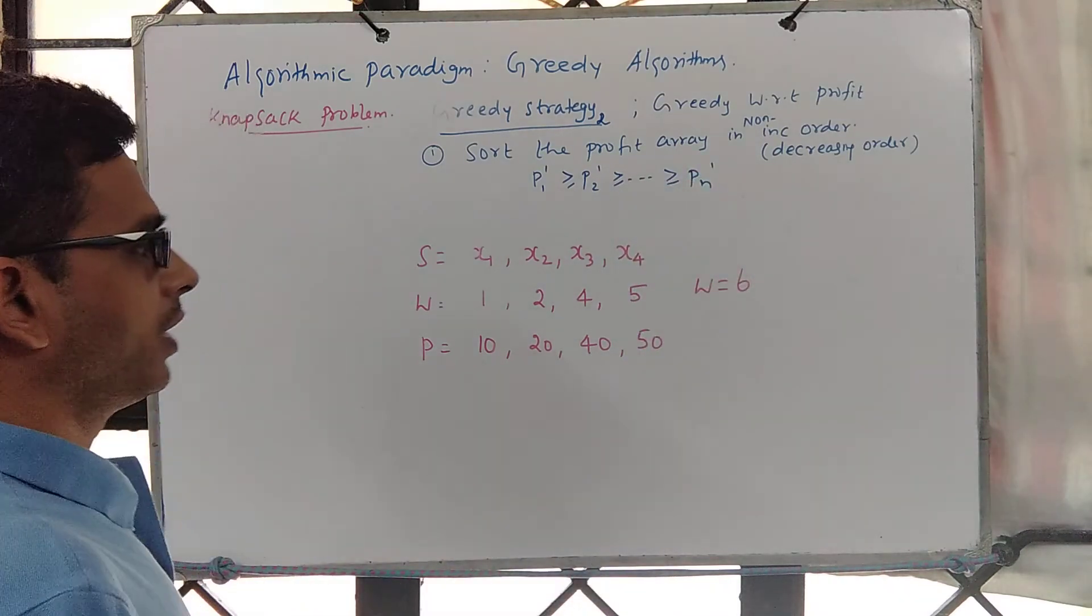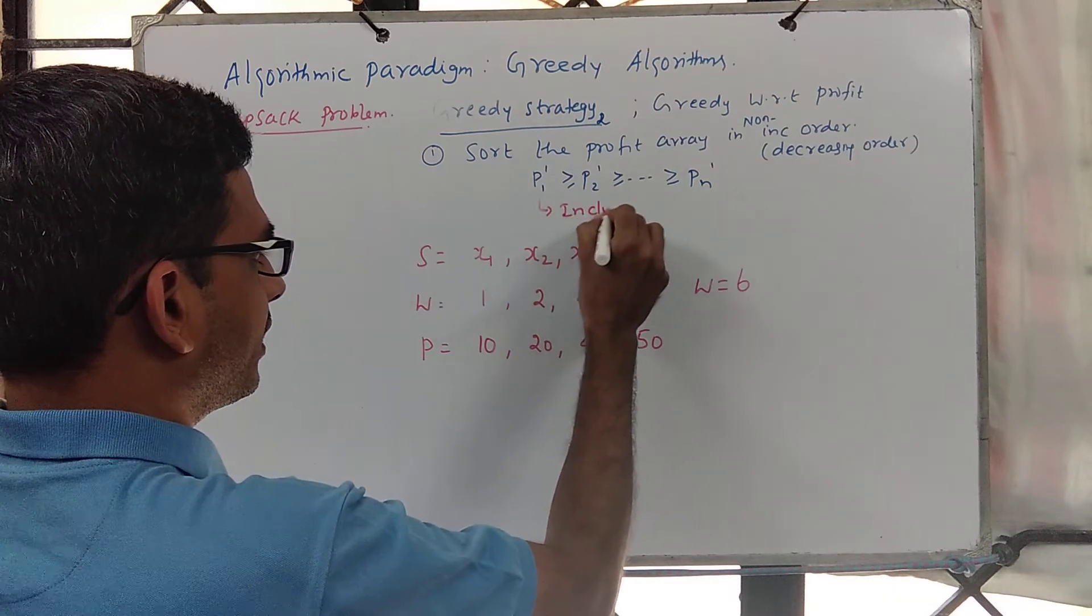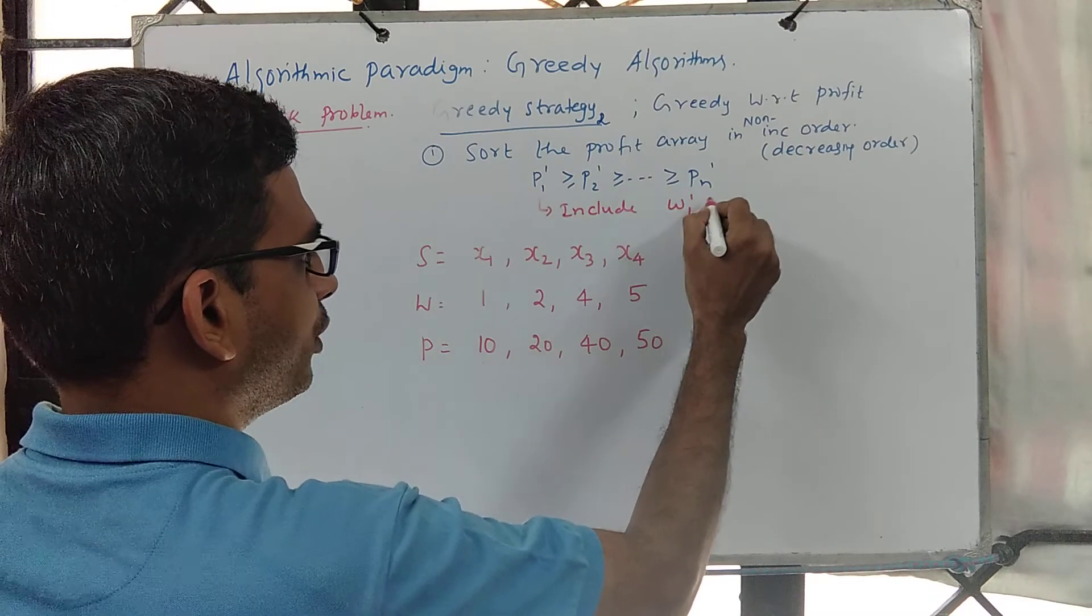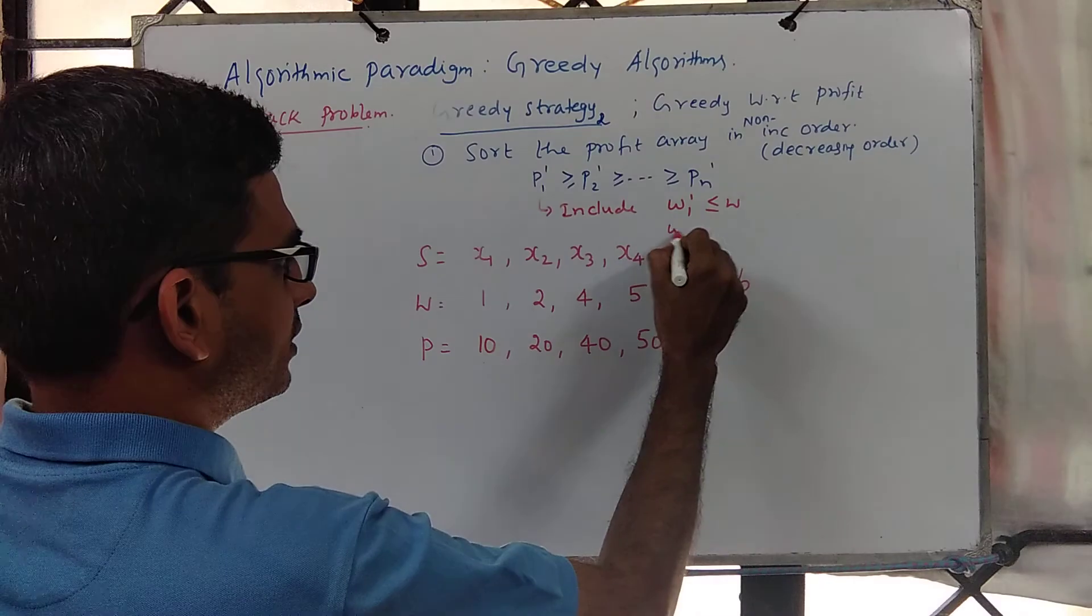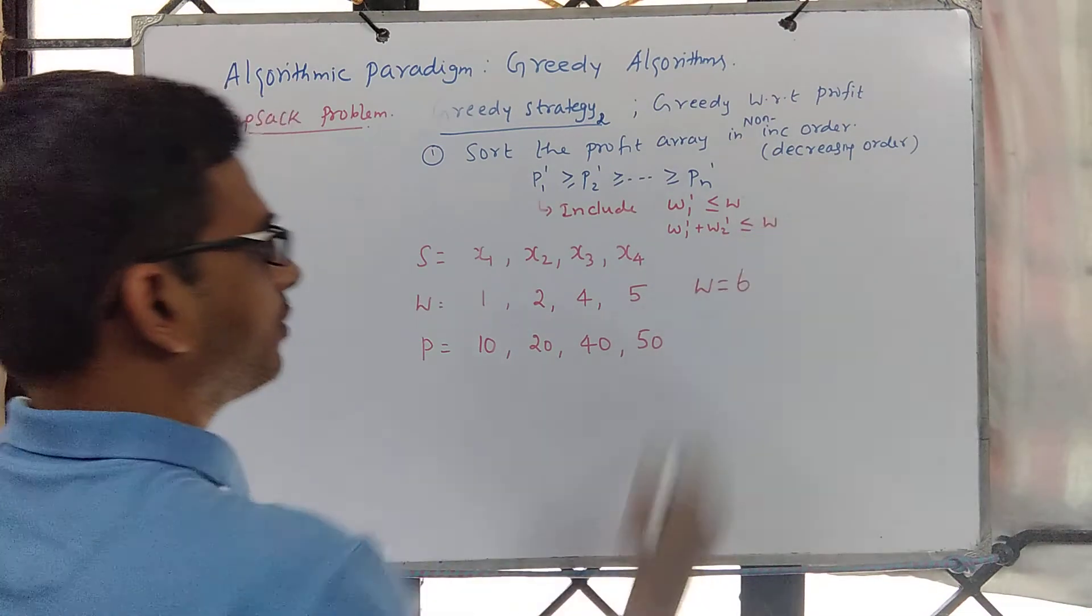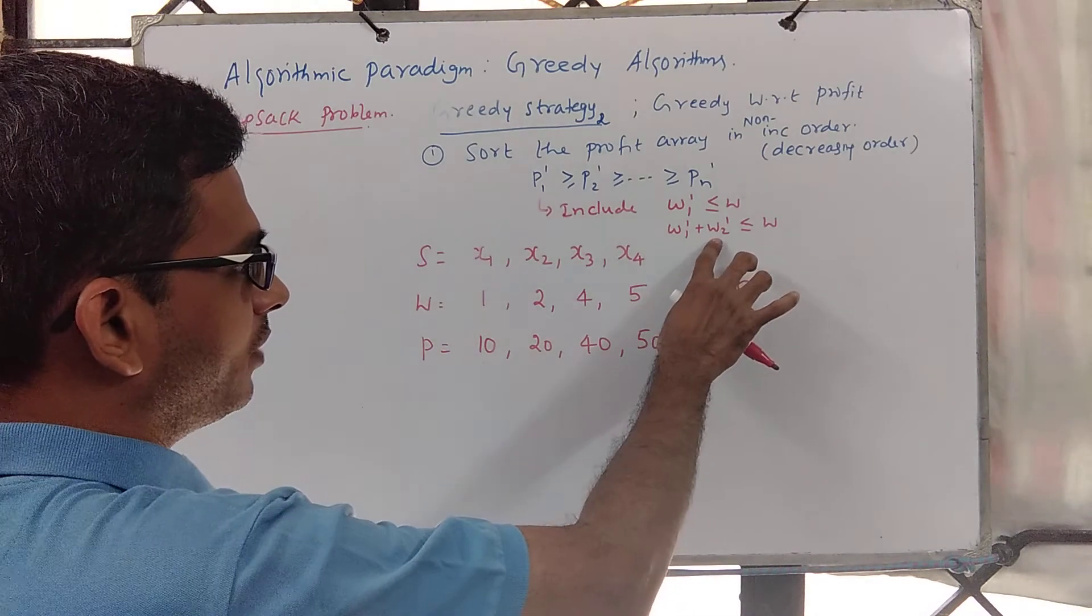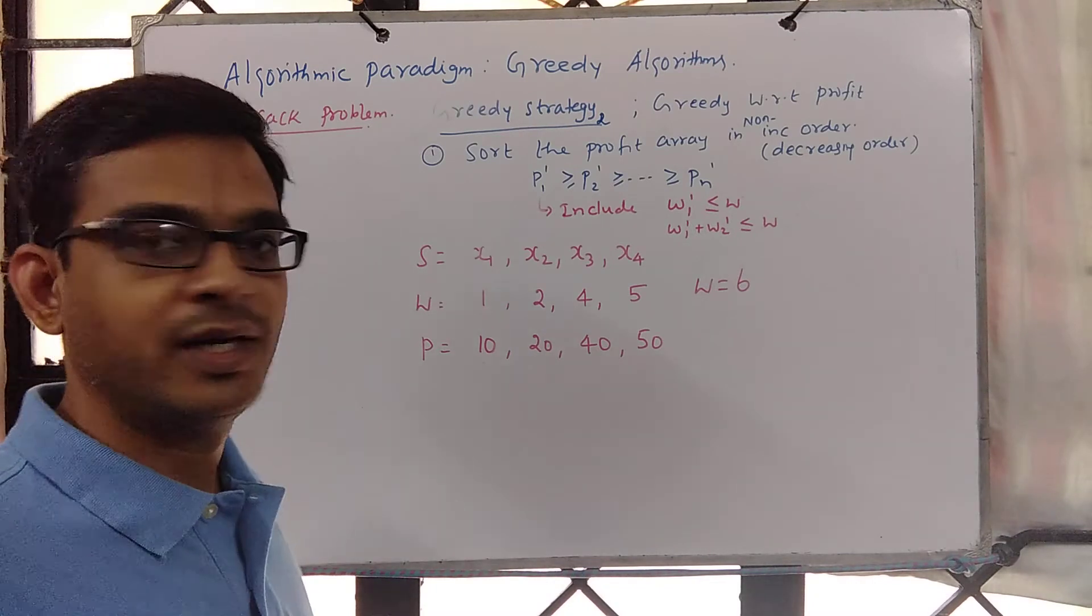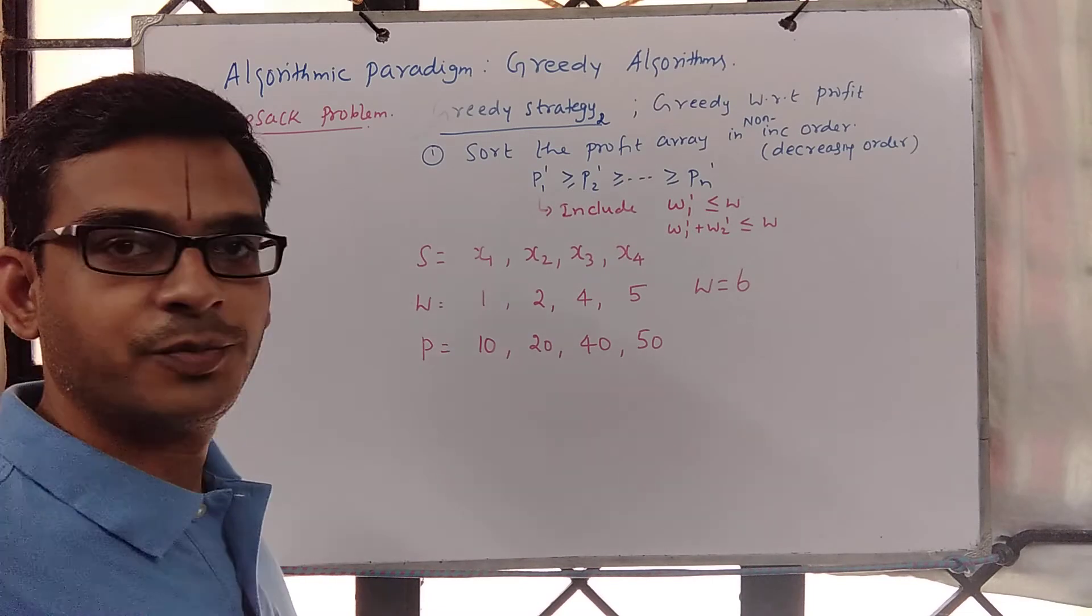Now we include this and then check the corresponding weight. So w1 prime is less than or equal to w. If so, we go to the next object and check whether w1 prime plus w2 prime is less than or equal to w. If we are unable to include w2, we look at next object w3, w4, and so on up to wn. When you cannot include any more object, you stop the procedure and output such a set.